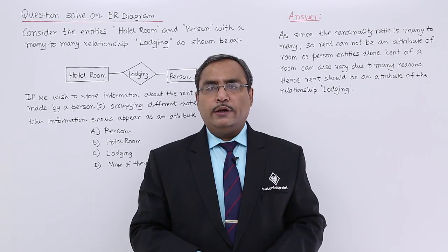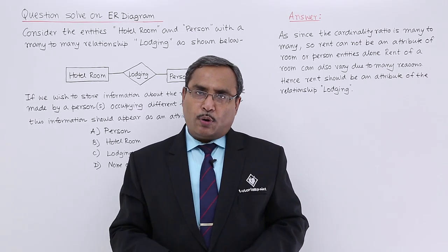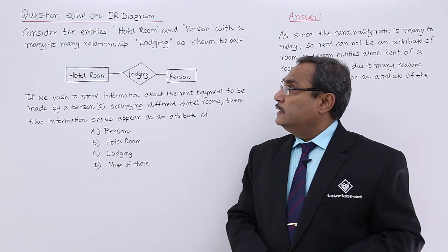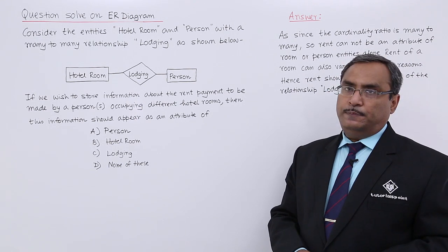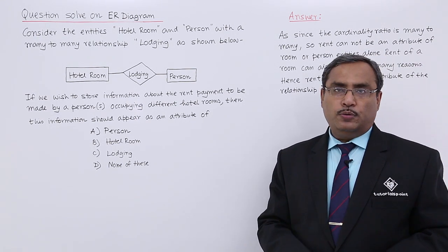We are going to solve one problem on ER diagram. So here is the problem for us. Consider the entities hotel room and person with a many to many relationship lodging as shown below.